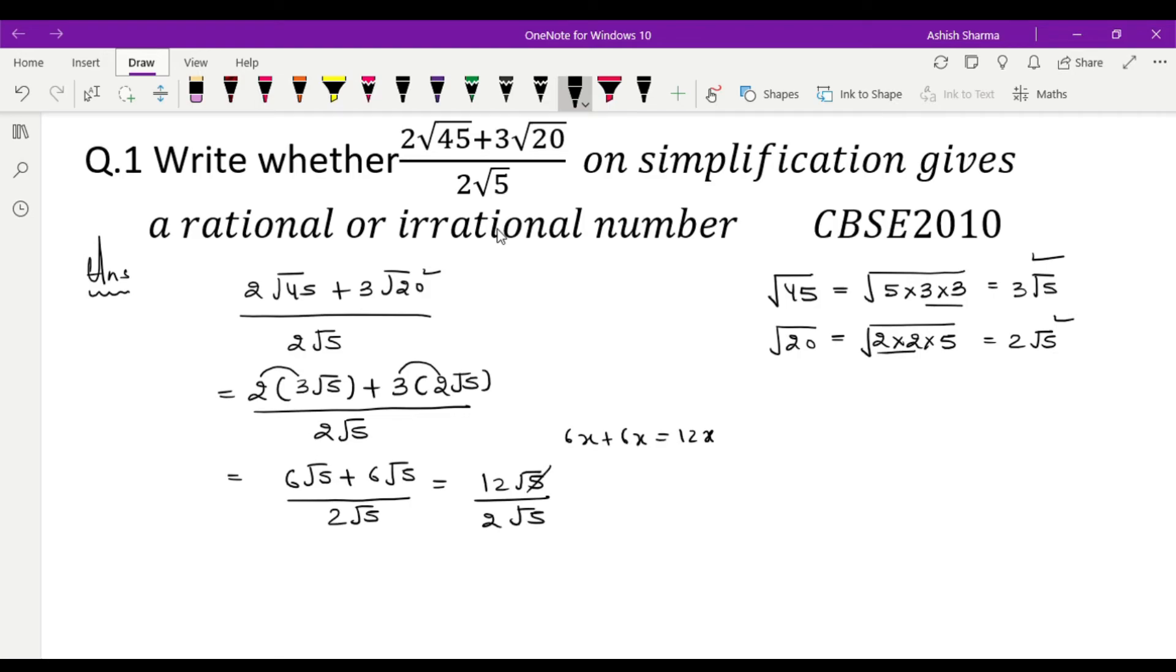Theek hai, to yeh root 5 and root 5 will cancel out. And 2, 6 are 12, yeh bhi cancel ho jayega. So it is 6.